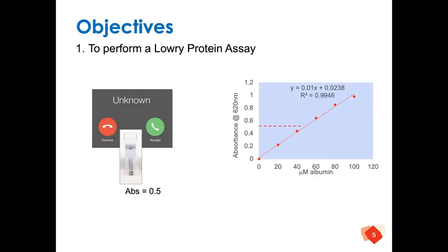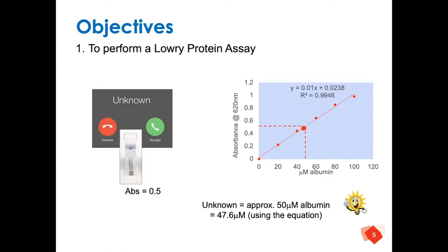Now we could do the old-fashioned method and read across 0.5, read it to the standard line, drop in a point, and read it down to the baseline — based on that we'd say we've got about 50 microlitres of albumin. But we've also learned that you can quantify that to a greater degree of accuracy by using the equation. Making x the subject and substituting 0.5 in for y, we'd get a precise value of 47.6 micromolar. These are the types of calculations we're going to be practising again today.